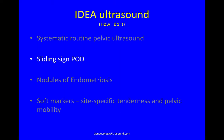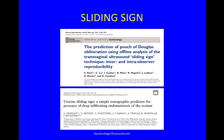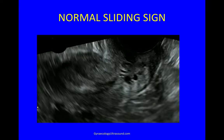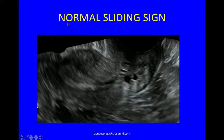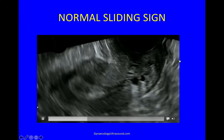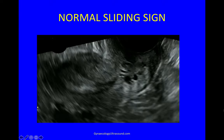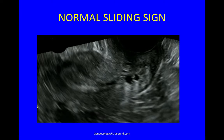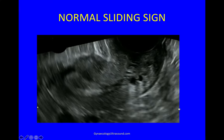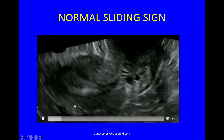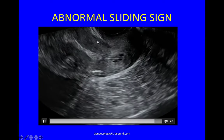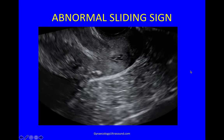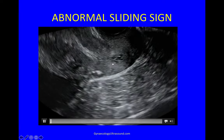Having done a normal systematic routine pelvic ultrasound specifically looking for those features, next I'll do the sliding sign. The sliding sign was published in 2013 and is something we should absolutely do in every single pelvic scan. In a normal sliding sign, on very gentle movement of the probe the bowel moves one way and the cervix moves the other — there's entirely free mobility behind the uterus. Comparing that to an abnormal case, you can see things move but it all moves together because everything is adherent to the back of the cervix.